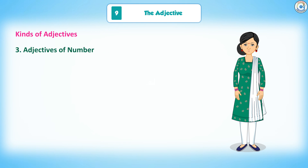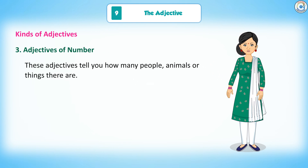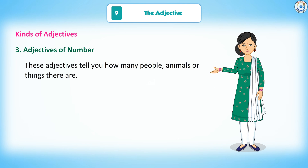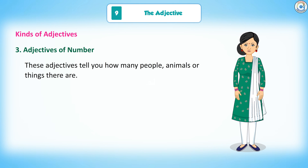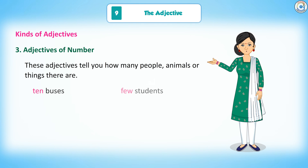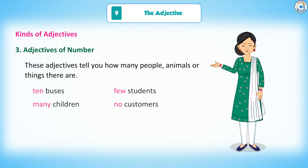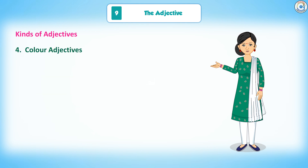3. Adjectives of number: These adjectives tell you how many people, animals, or things there are. Examples: buses, few students, many children, no customers.